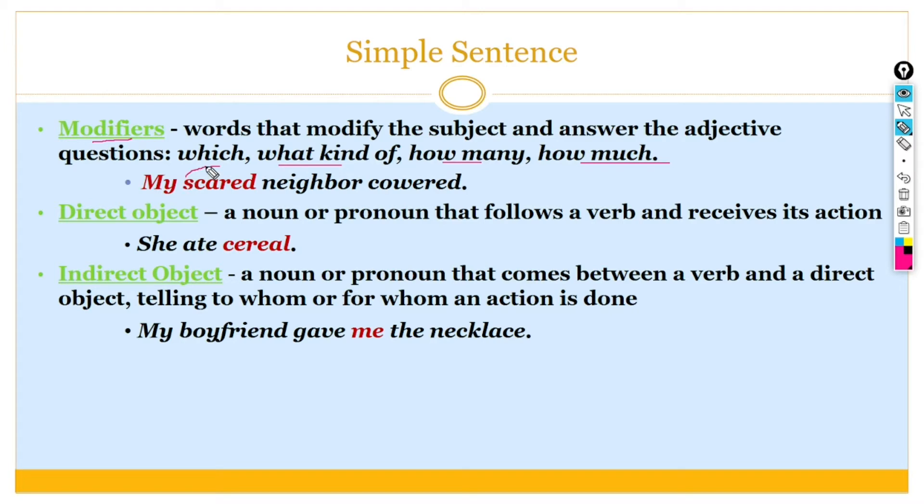Now I discuss the direct object and indirect object. Direct object is a noun or pronoun that follows a verb and receives its action. In this example, she ate cereal, so cereal in this example is the direct object.